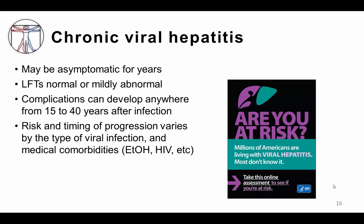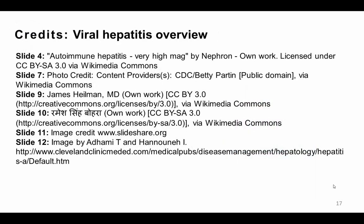For example, a patient who is infected with both viral hepatitis and HIV, or a patient who is infected with viral hepatitis and is also a heavy drinker, has a significantly higher risk of progressing to cirrhosis and may progress at a faster rate. Thank you so much for your time and attention.